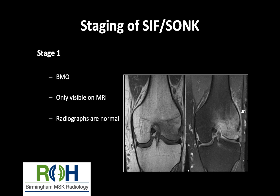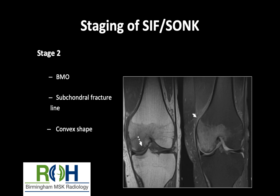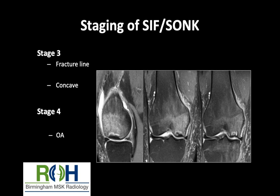Looking at subcondylar insufficiency fracture — it was previously known as spontaneous osteonecrosis. Stage 1 is osseous edema, only visible on MRI; radiographs will be normal. In Stage 2, you can see subcondylar sclerosis or subcondylar insufficiency fracture; however, the convex surface of the articular surface is still maintained. In Stage 3, you see the fracture but the subcondylar bone may demonstrate concavity or depression. And in Stage 4, there is associated secondary osteoarthritis.